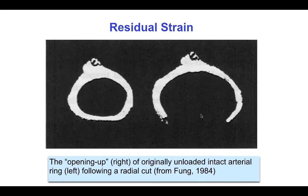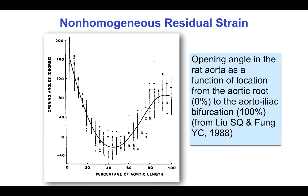Because bending causes compression on the inside and tension on the outside, they average out so that the intact ring can be in equilibrium with zero external loads, even though it is not stress-free. The opening angle, and hence the residual stress and strain, vary markedly along the length of the rat aorta, from almost 180 degrees by the heart to less than zero at the middle of the aorta — which means that the vessel actually doubles over itself when it is cut — and then back up to about 90 degrees at the distal end of the aorta at the iliac bifurcation.